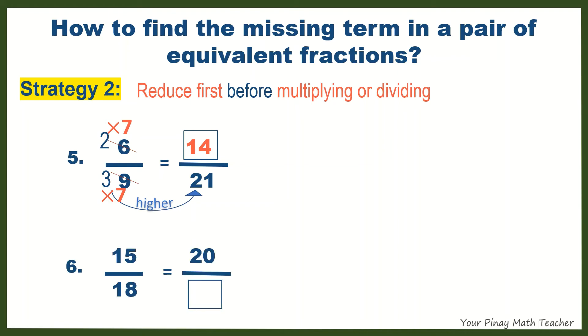Number 6: 15 and 18 can also be reduced by 3, and the reduced form is 5 over 6. 5 gets higher to 20, so we have to multiply 5 by a certain number to get 20, and that number is 4. Do the same with 6, so the missing term is 24.